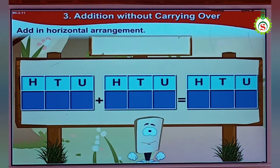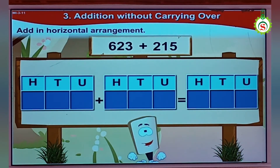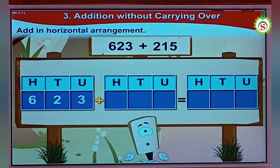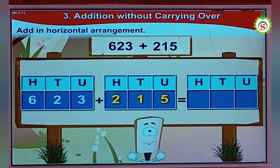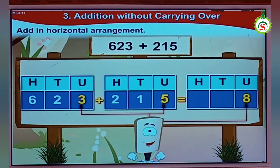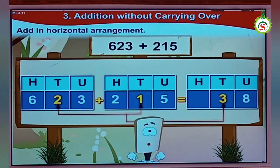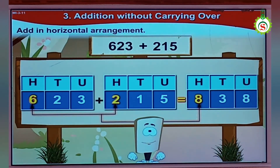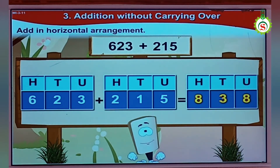Now the next part. 623 means 600, 2 tens, 3 units. Plus 250 is 200, 1 ten, 5 units. Now, 3 units plus 5 units is 8 units, so I write 8. 2 tens plus 1 ten is 3 tens. And 600 plus 200 is 800, so I write 8. So it is 838.